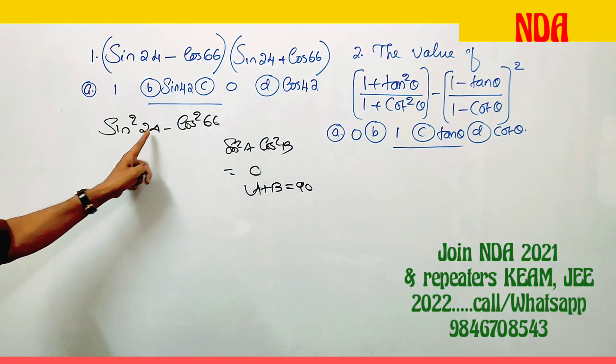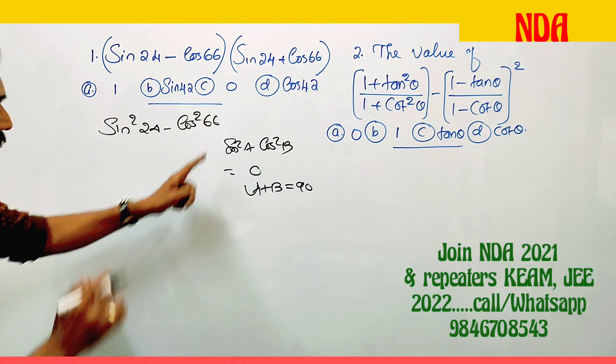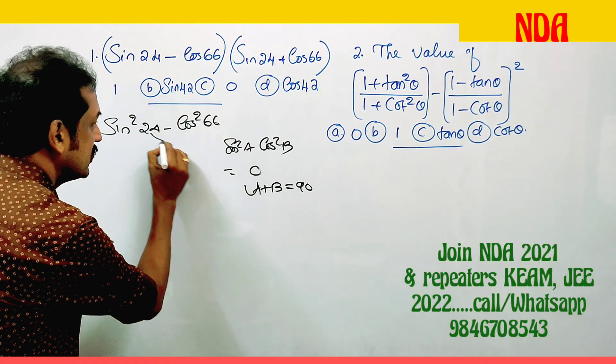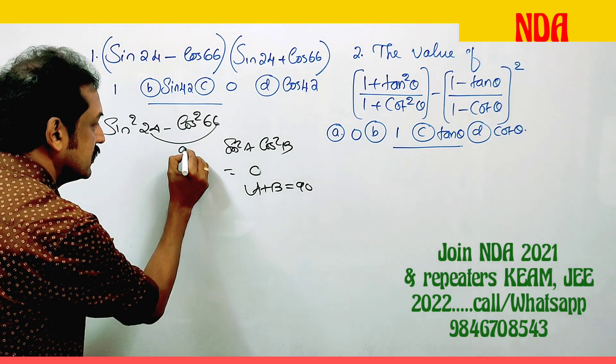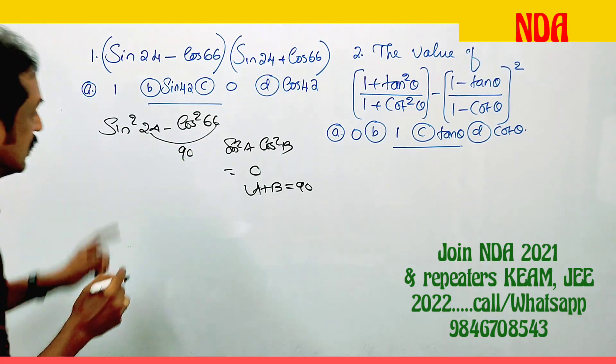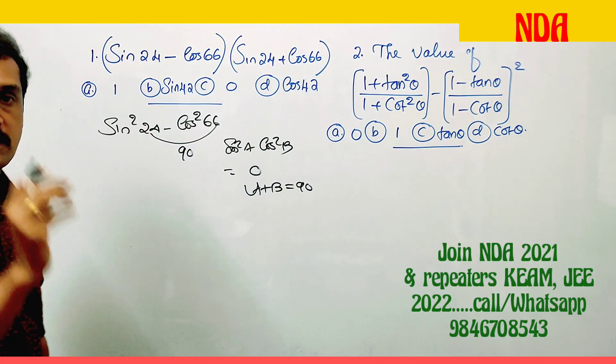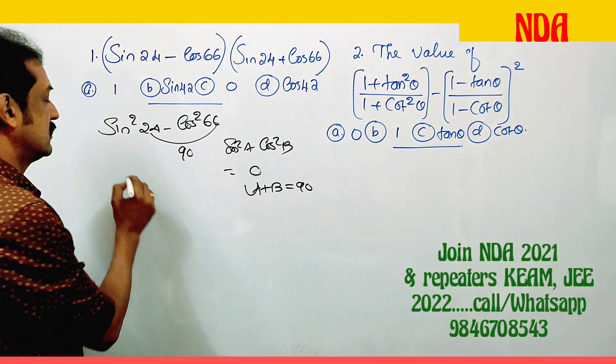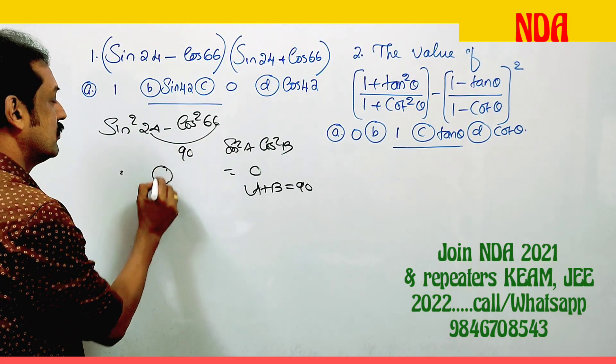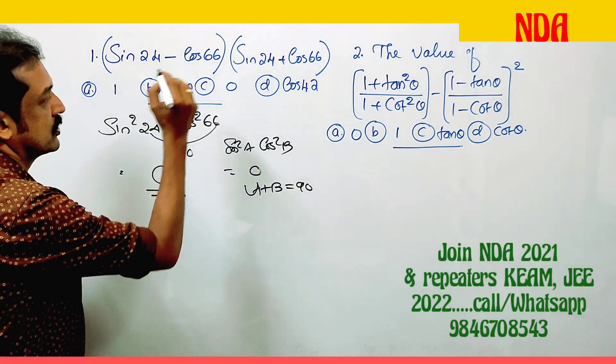Here we have 24 and 66. The sum of these two angles is equal to 90. Therefore, sin squared 24 minus cos squared 66 is always 0.